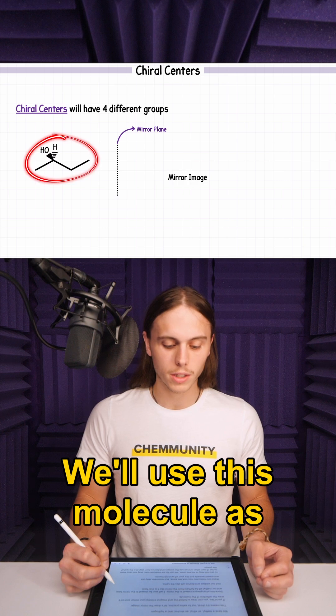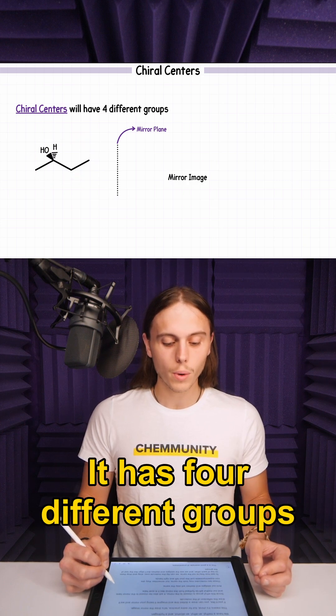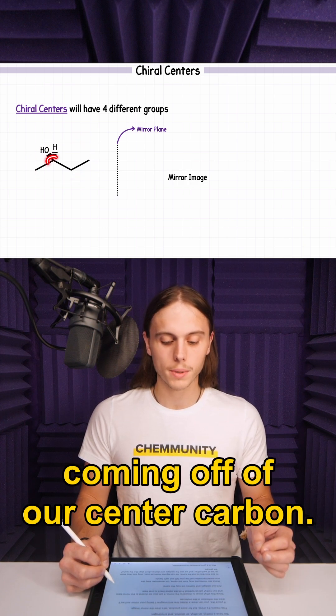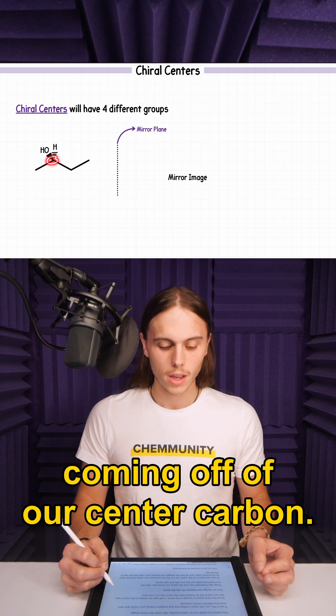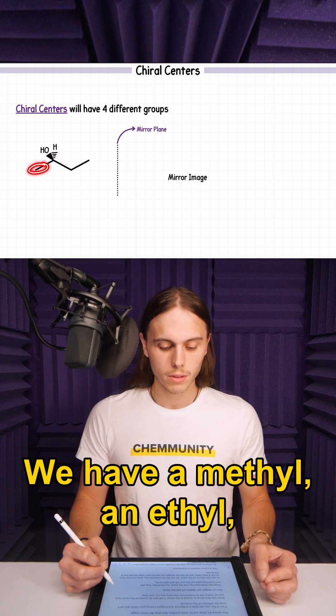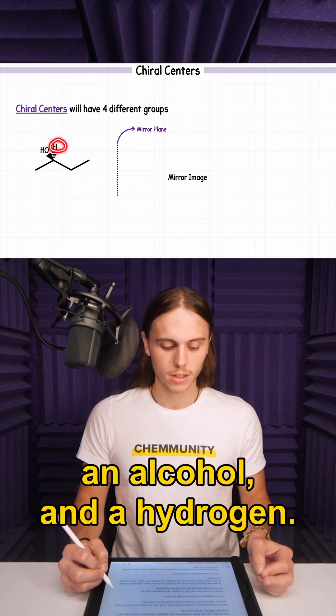We'll use this molecule as an example. It has four different groups coming off of our center carbon: a methyl, an ethyl, an alcohol, and a hydrogen.